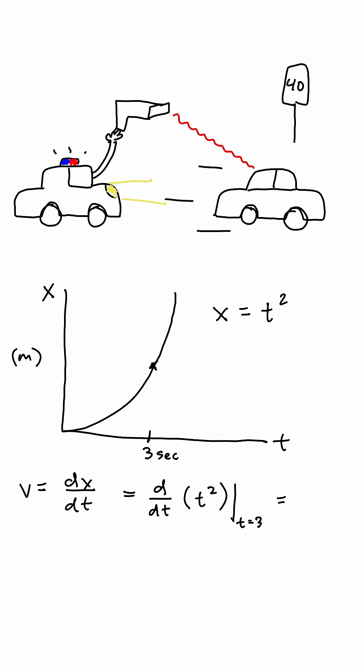We can take the derivative of the function of displacement with respect to time, and then plug in 3 to get the velocity at 3 seconds.